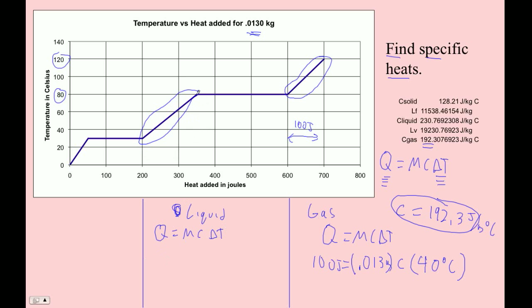Yeah, there you go. So 100 joules, 150 joules. 150 joules equals 0.013 kilograms times C times, and then our delta T, what is that? 20, 40, 50, is that right? 30 to 80, yes it is. 30 to 80 is 50 degrees Celsius.